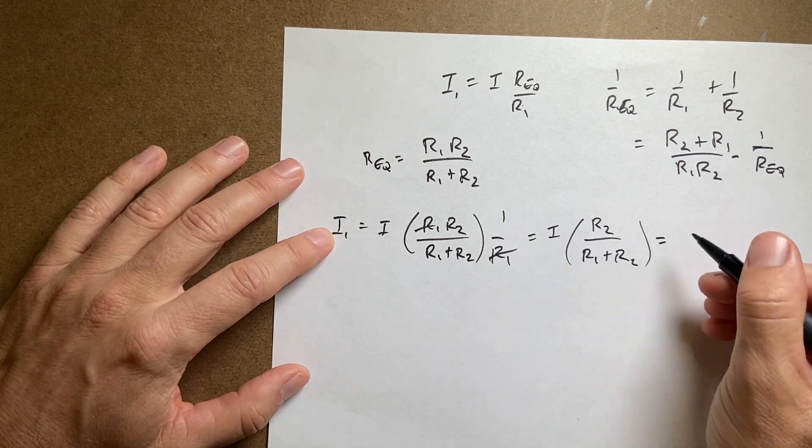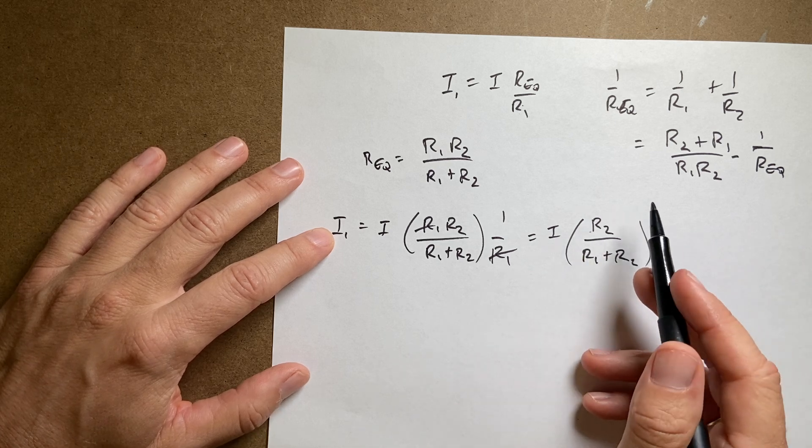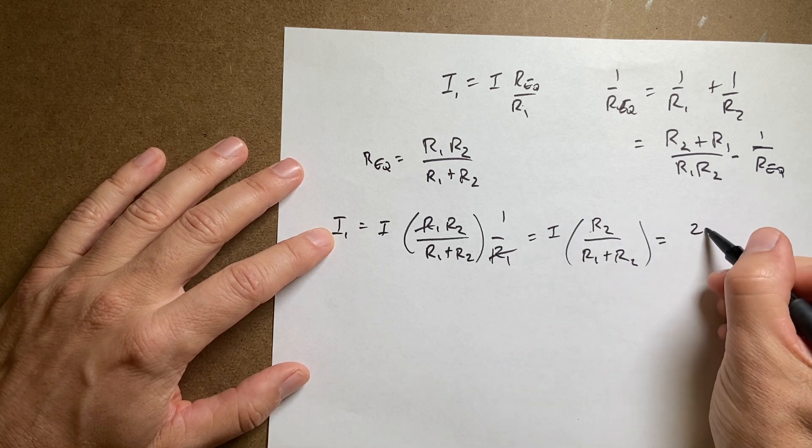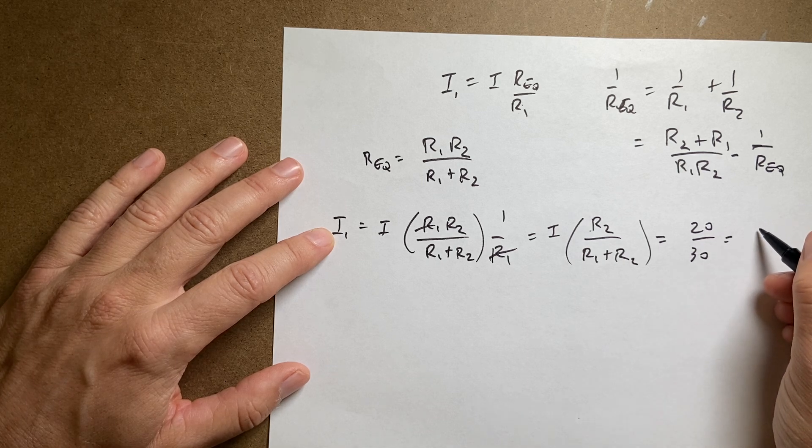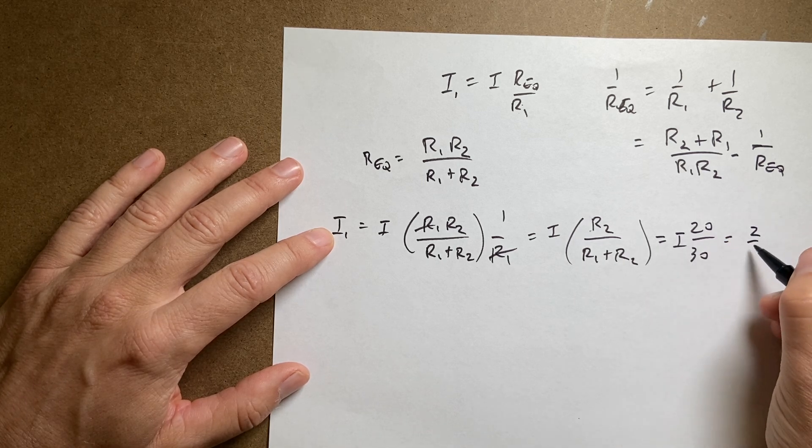So now let's choose my actual numbers here. So if I have, I had R2 as 20 ohms. So I have 20 over 30. So this is times I. So this is 2 thirds I.